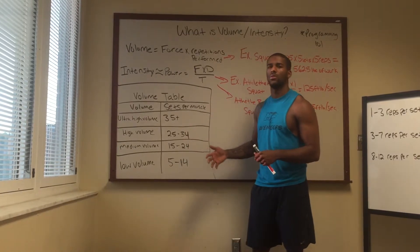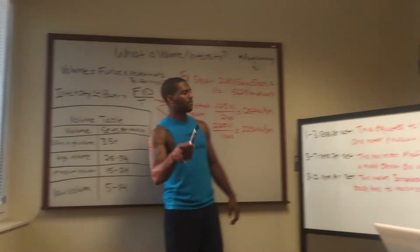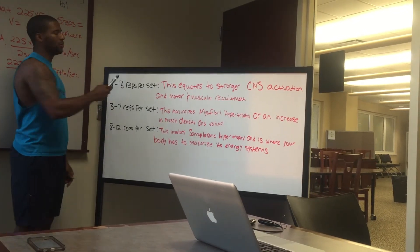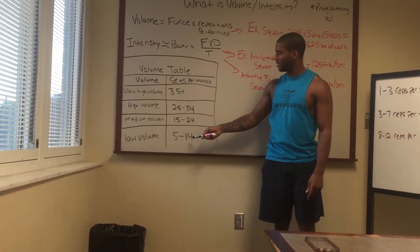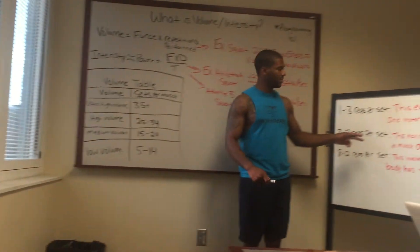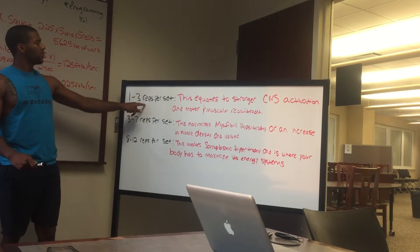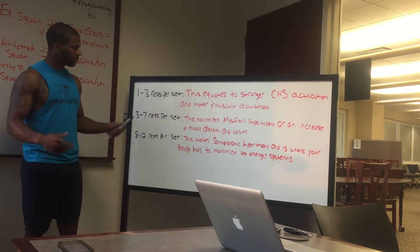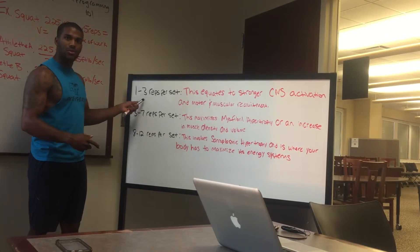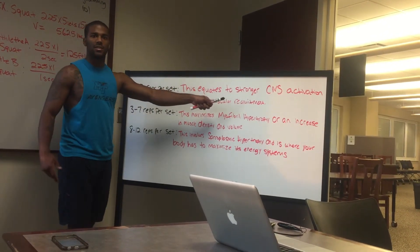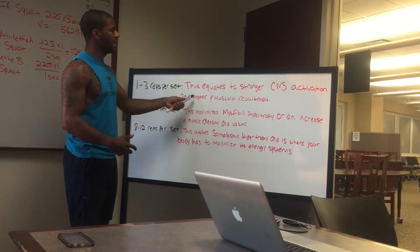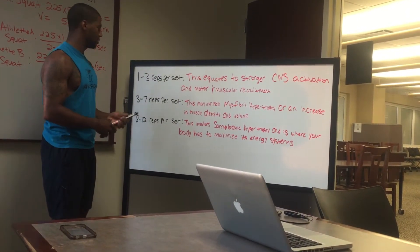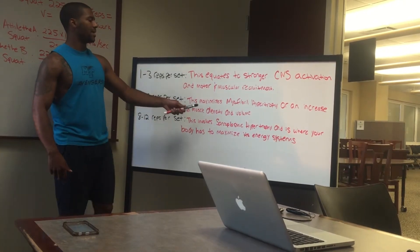Looking at the rep ranges: one to three reps per set equates to stronger CNS activation and motor and muscular recruitment. What that means is that maxing out or doing a triple is going to tax your central nervous system — this is testing strength. That's the 80 to 90 percent range, or even 90-plus percent, especially when you're doing triples and singles.